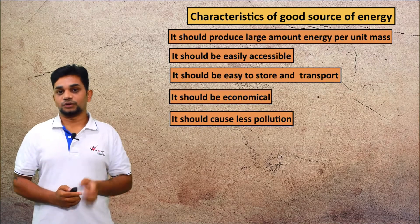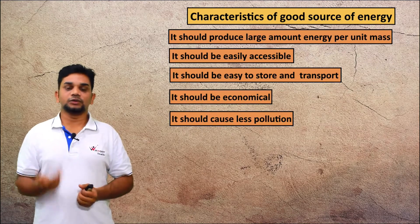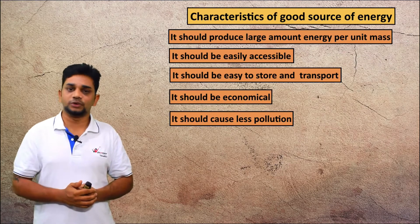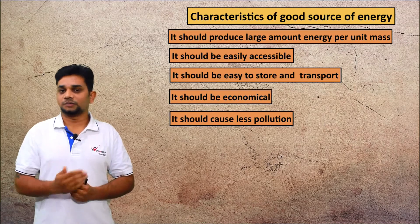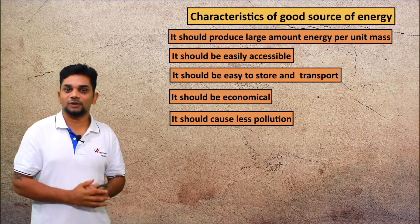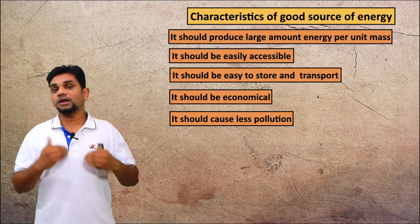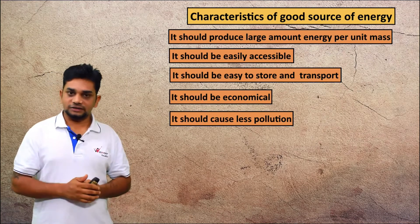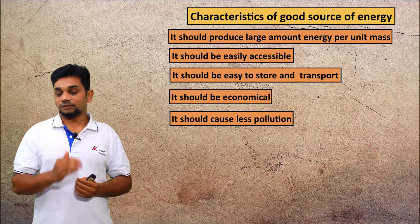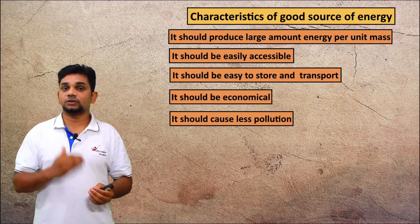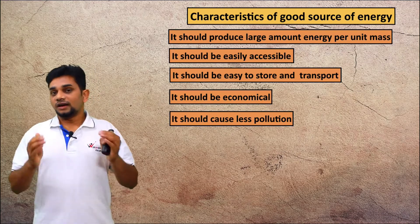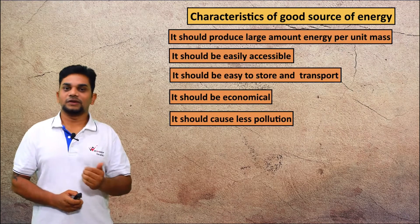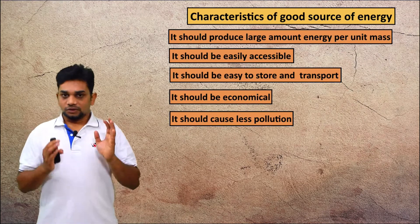It should cause less pollution. When we are using sources of energy like diesel and petrol, they are producing a large amount of pollution — carbon monoxide and carbon dioxide — which is very harmful to the environment. So we need to select a source of energy that causes less pollution to the environment. Then we can say that it is a good source of energy.